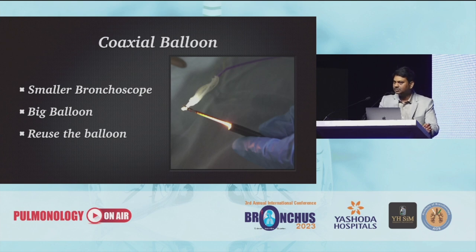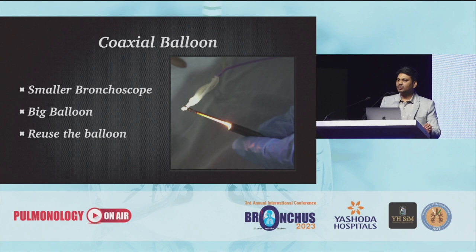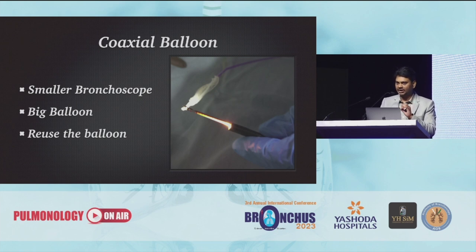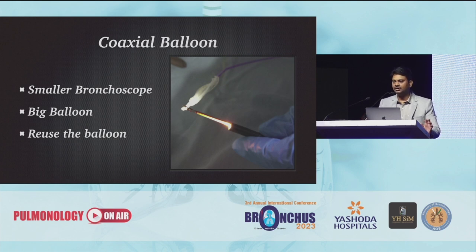Then coming to the coaxial balloon. What is this coaxial balloon? This technique is very simple. Any balloon of any size can fit any size of scope — that is the concept behind the coaxial balloon. Most of the time, we use a single-use balloon through the working channel. But suppose you have a small scope and want to do dilatation with a big balloon, which is not otherwise possible, or if you want to reuse the balloon due to financial constraints — you can use this technique.